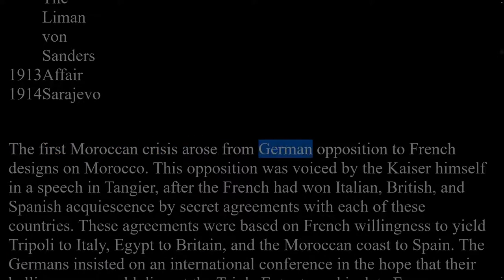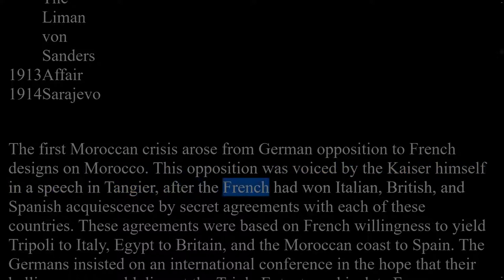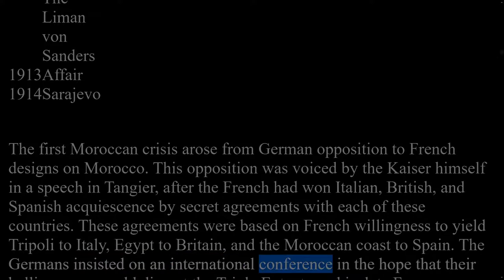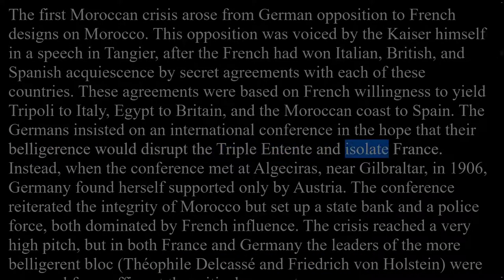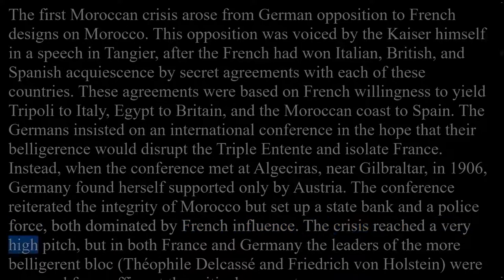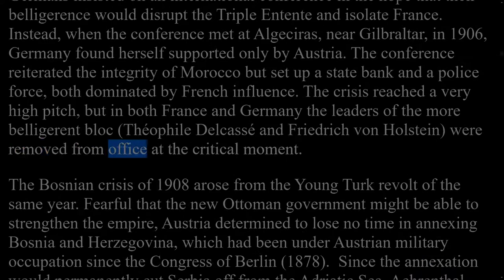The first Moroccan crisis arose from German opposition to French designs on Morocco, voiced by the Kaiser in a speech at Tangier, after the French had won Italian, British, and Spanish acquiescence by secret agreements. The Germans insisted on an international conference hoping their belligerence would disrupt the Triple Entente and isolate France. Instead, when the conference met at Algeciras in 1906, Germany found herself supported only by Austria. The conference reiterated the integrity of Morocco but set up a state bank and police force dominated by French influence. The crisis reached a very high pitch, but the leaders of the more belligerent blocs — Delcassé and Friedrich von Holstein — were removed from office at the critical moment.